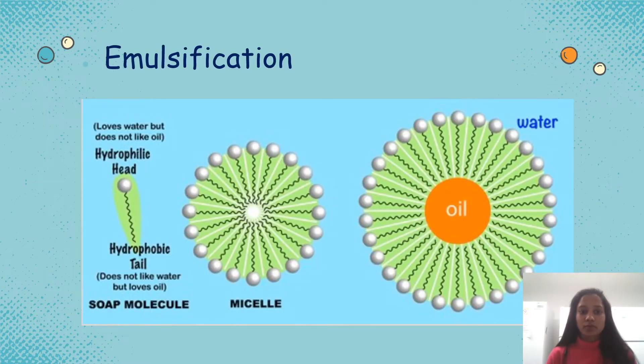The process of fat digestion is called emulsification. To do that, we need molecules like bile which contain both polar head and non-polar tail.